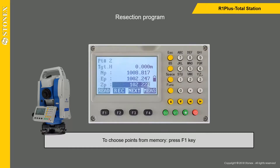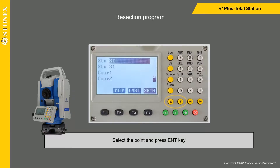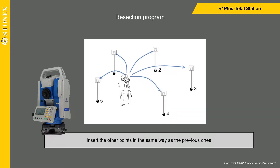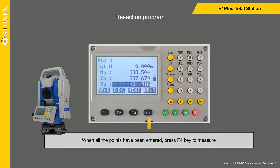As an alternative to manual input, it is possible to choose points from memory. Press the F1 key, select the point, and press the Enter key. Insert the other points in the same way as the previous ones.